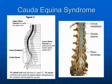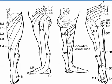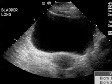Another major red flag is cauda equina syndrome. By definition it has three things: first, severe low back pain and sciatica; second, perineal or saddle anesthesia; and third, abnormal bowel and bladder control. The cauda equina is the 'horse's tail' in the lumbar spine, which controls bowel and bladder. If you painted a saddle and sat on it naked, where the paint contacts is where patients get anesthesia from cauda equina syndrome.